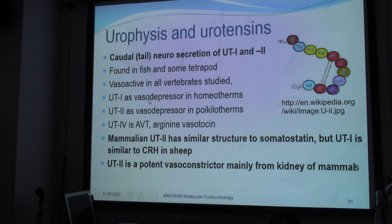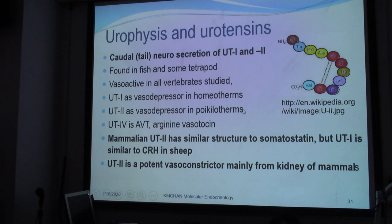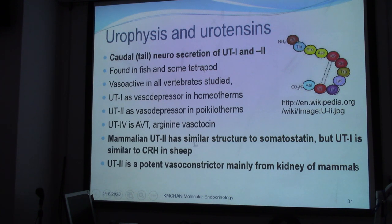Urotensin 1 is found in homeotherms — animals that can control their body temperature. Urotensin 2 is more common in poikilotherms — animals that cannot control their body temperature; their body temperature is the same as the ambient temperature. There is also urotensin 4, which is very similar to arginine vasotocin. Importantly, mammalian urotensin 2 has a similar structure to somatostatin, which is the hormone related to growth, while UT1 is similar to corticotropin-releasing hormone.